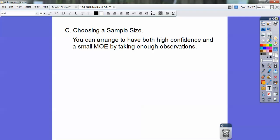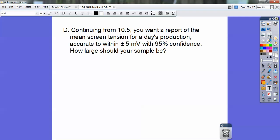Choosing the sample size. You can arrange to have both a high confidence and smaller margin of error by taking enough observations. Section D, continuing from section 10.5, you want to report of the mean screen tension for a day's production accurate within plus or minus 5 millivolts, with a 95% confidence interval. How large should your sample be? This is where we're looking for N.